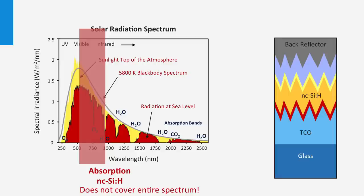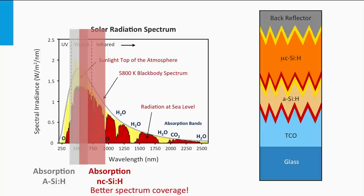Both single junction amorphous and nanocrystalline silicon solar cells do not have an optimum spectral utilization. For that reason, multi-junction concepts are used in the thin film silicon field as well. One of the most studied concepts is the so-called micromorph concept, a double junction consisting of one amorphous silicon p-i-n junction and a nanocrystalline silicon p-i-n junction. The amorphous junction has the highest bandgap and acts as the top cell — the p-i-n junction facing the front where incident light passes first. The cell with the highest bandgap acts as the top cell because the most energetic photons have the smallest penetration depth. The bottom cell, with the lowest bandgap, harvests the lower-energy photons.